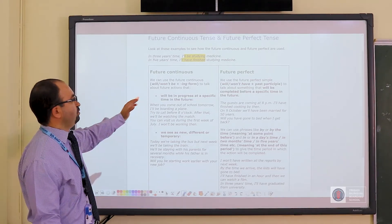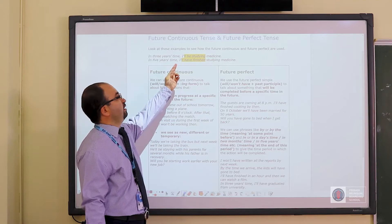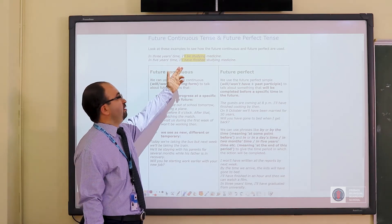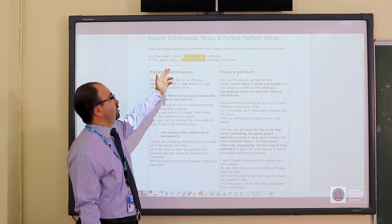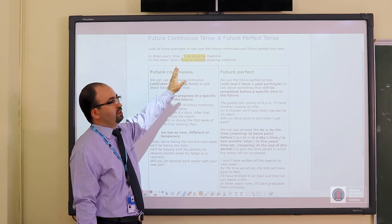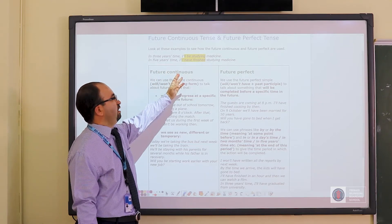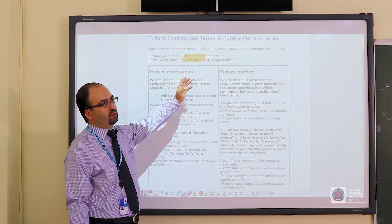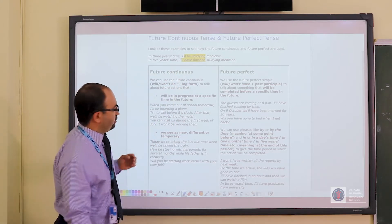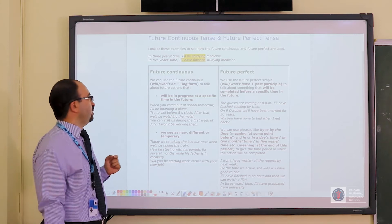The structure we use here is, for the continuous tense, as you can see, will be studying and will have finished. So the structure is will plus be and verb plus ing, and for perfect tense, the structure is will plus have and past participle. So just have a look at the future continuous first.